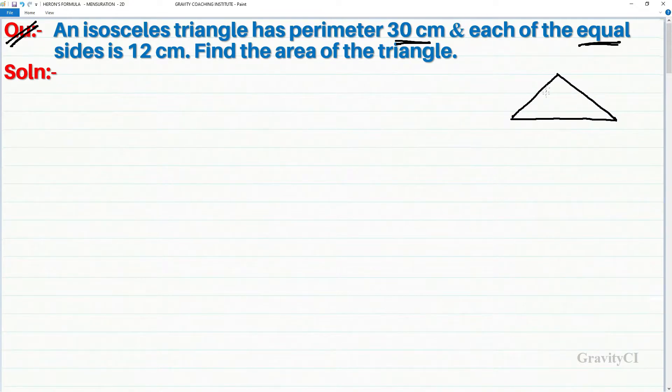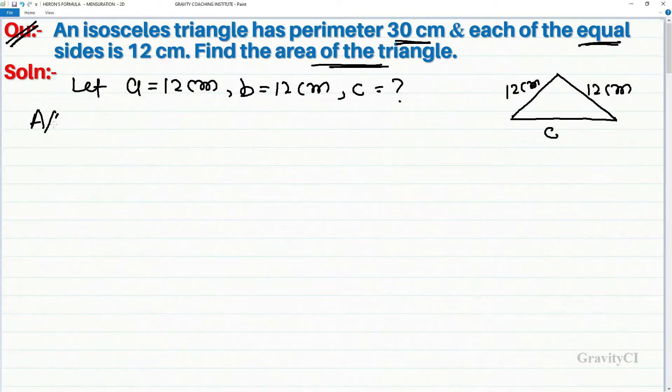Let a equal to 12 centimeter, b equal to 12 centimeter, and third side c. We will find c according to the question.